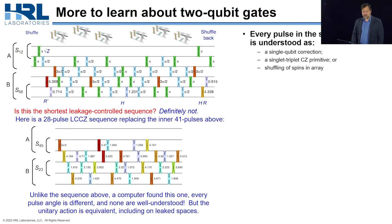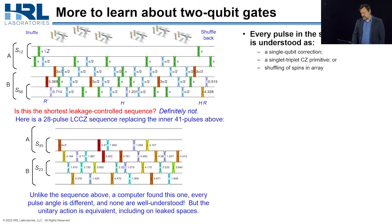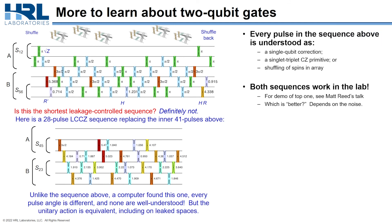Is this the best we can do — the shortest sequence that does leakage control and entangles two DFS qubits? No. Here is another leakage-controlled CZ sequence on two DFS qubits found by a computer, again by Brian Fong and Steve Wanzura. It's much shorter: 28 pulses instead of about 40. The pulse angles are all different and not analytically understood — it's just what the computer produced. But the unitary action of these two gates is about the same. Which one is better? If you have white noise, the shorter sequence is better. If you have quasi-static noise, it's not obvious, and that's a topic for another day.